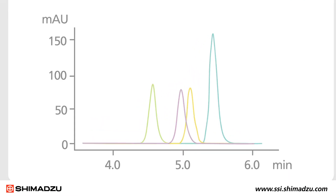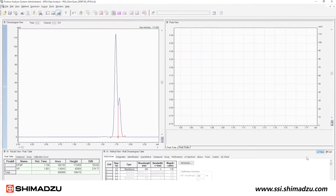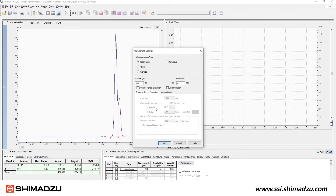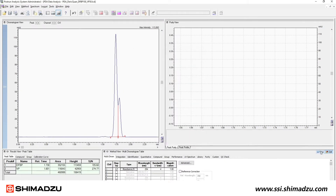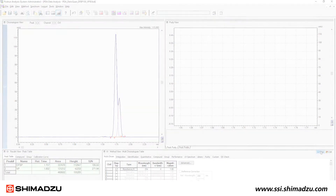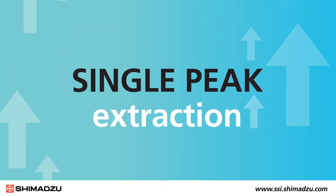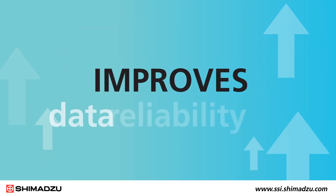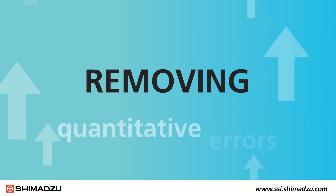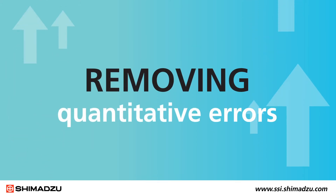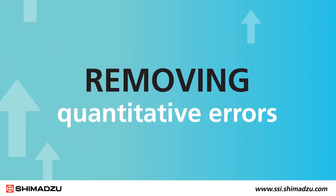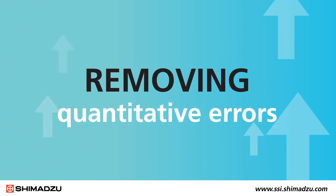IPDA reduces the effort required to further optimize separation parameters to achieve baseline separation, improving the efficiency of your workflows. By offering single peak extraction, it improves data reliability, removing quantitative errors due to peak integration ambiguities.